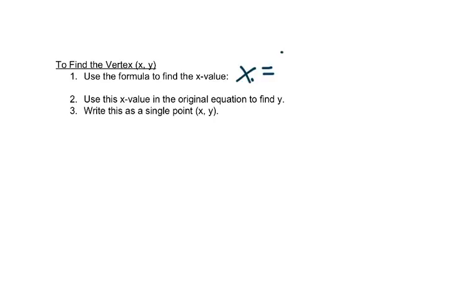First we find the x part, and it's the opposite of b over 2 times a. And that should look familiar, it's the first part of the quadratic formula, it just doesn't have the plus or minus and the square root. Then we use this x value in the original equation to find our y, and we'll write this answer as a single point.